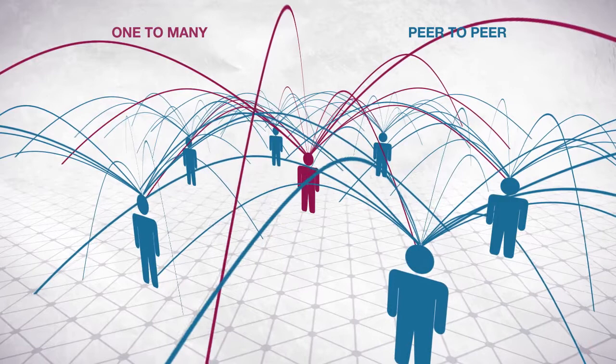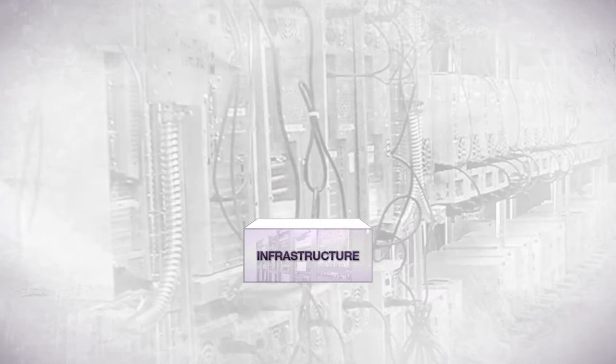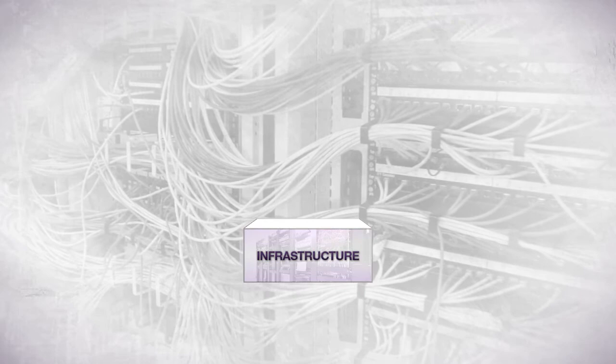How can we understand this new communications environment? It can be thought of as having a number of layers. Firstly, the infrastructure, the basic cables, wireless towers, hardware that carry digital material, without which free expression human rights are meaningless.